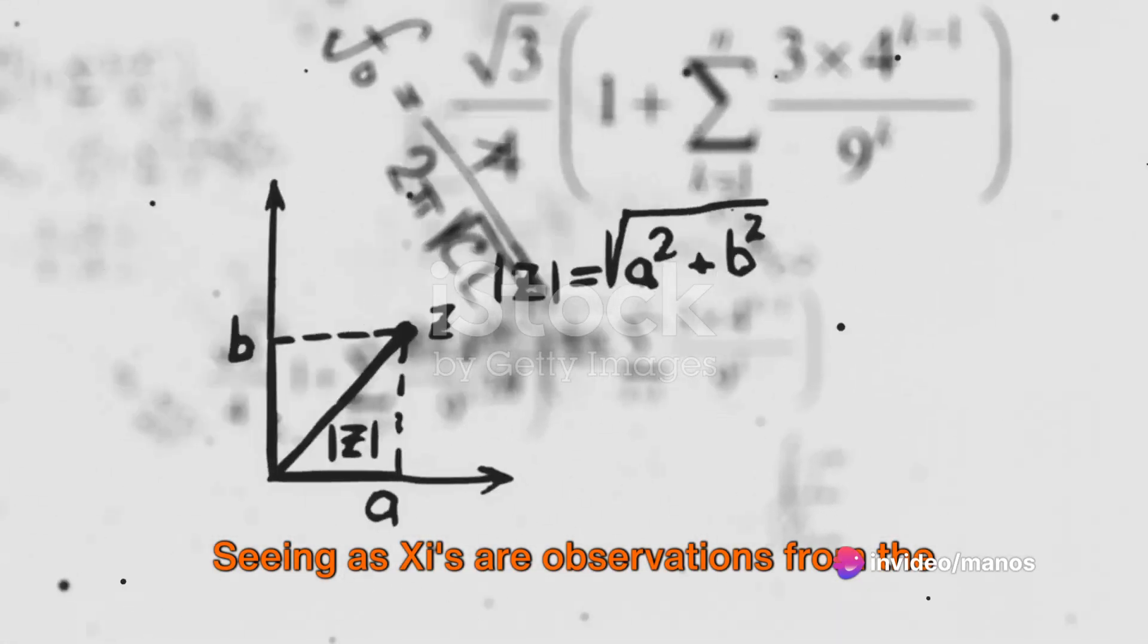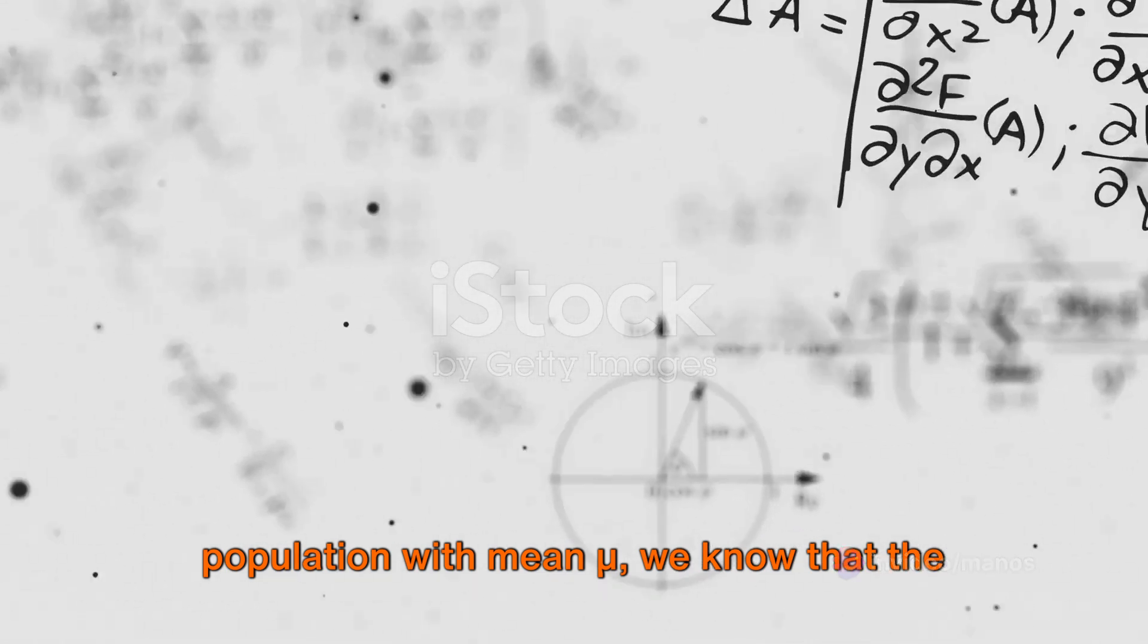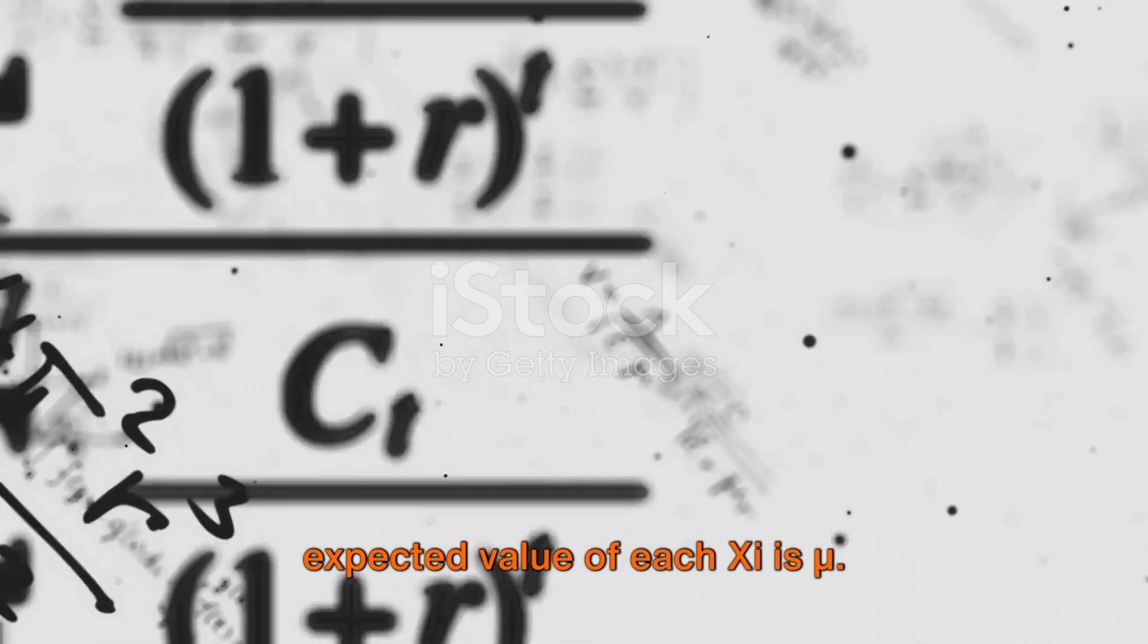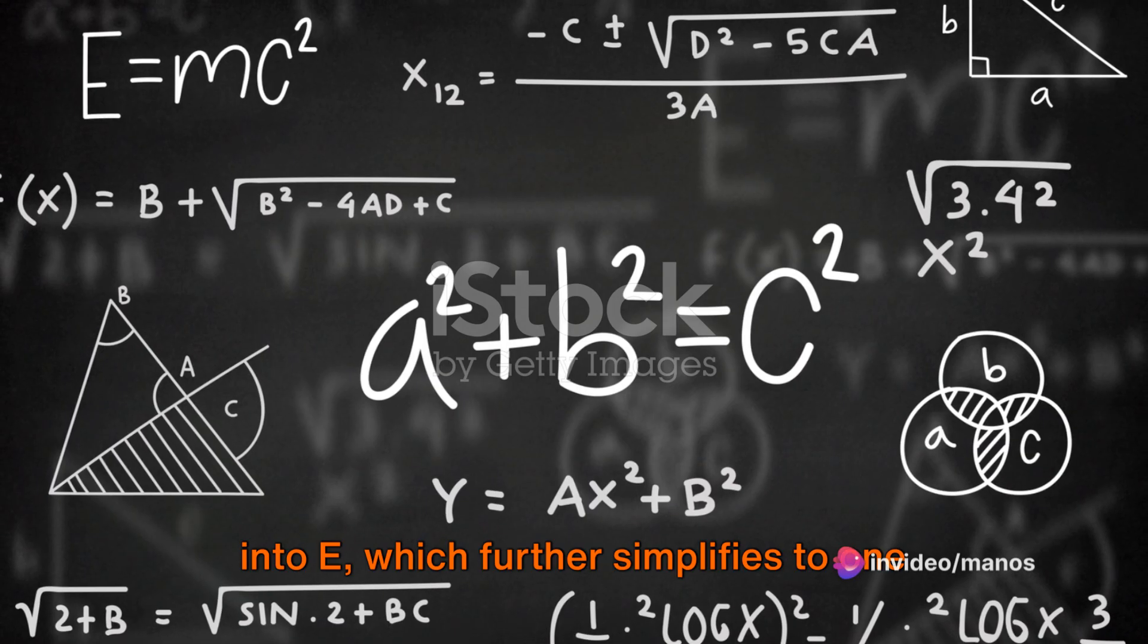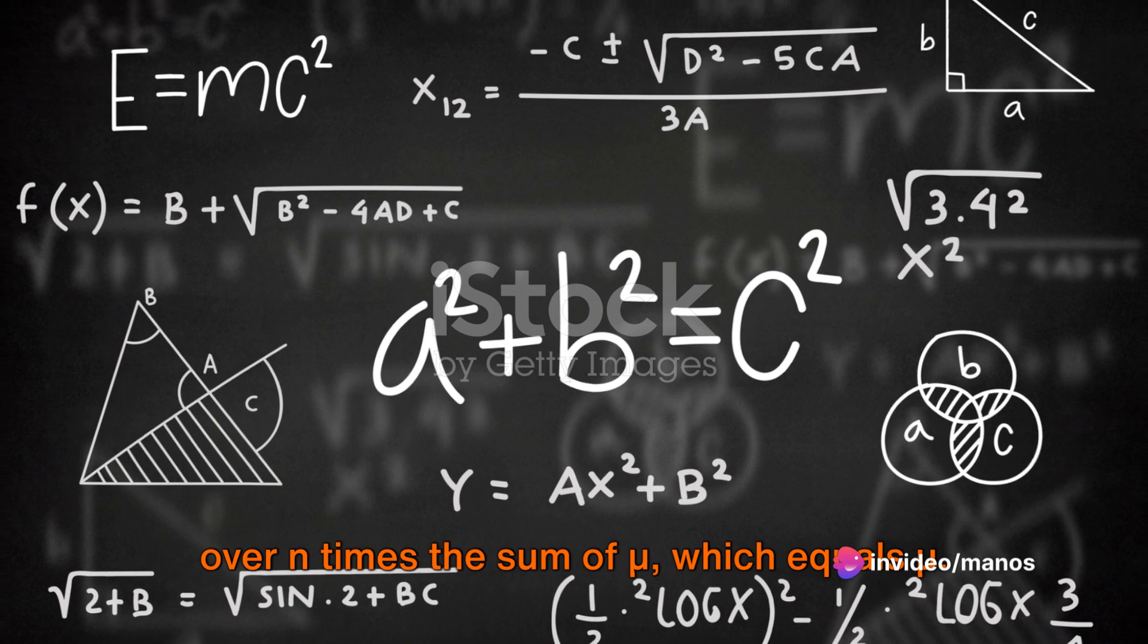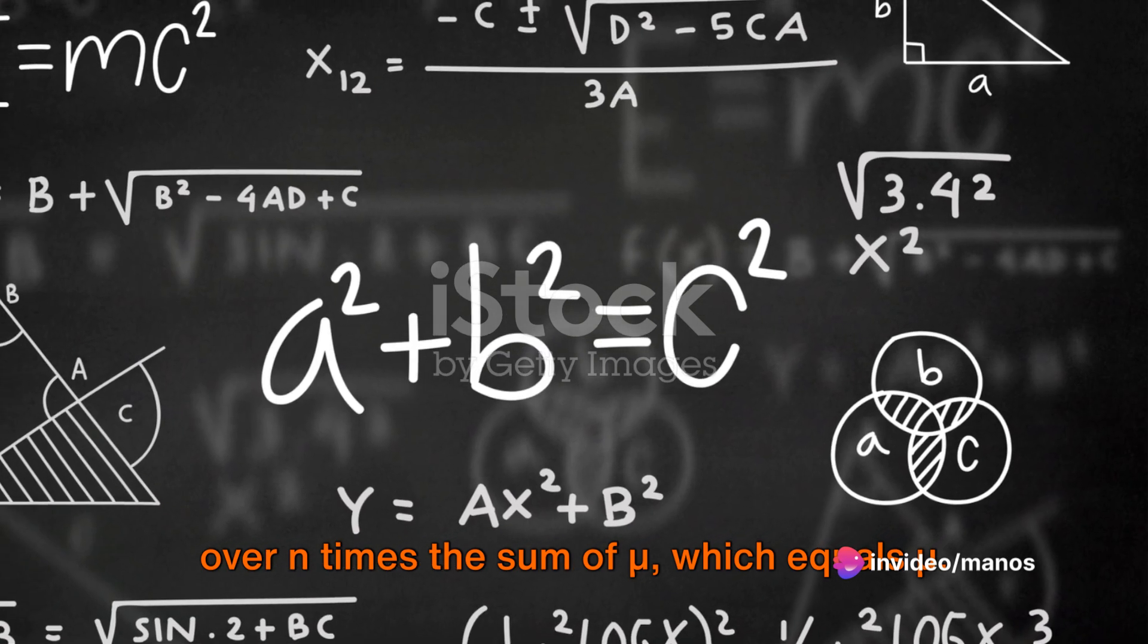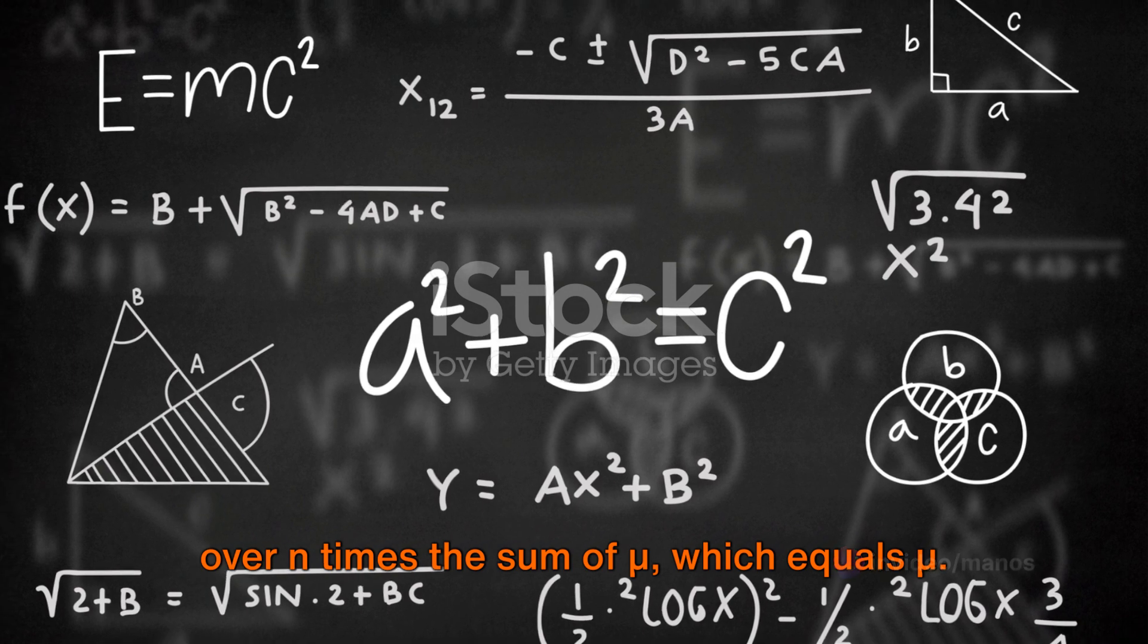Seeing as xi's are observations from the population with mean mu, we know that the expected value of each xi is mu. This allows us to simplify our equation into E(x bar) equals one over n times the sum of E(xi's), which further simplifies to one over n times the sum of mu, which equals mu.